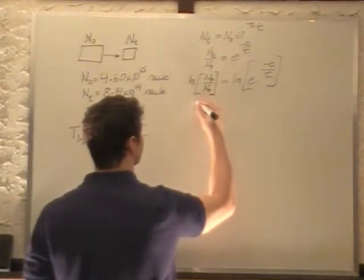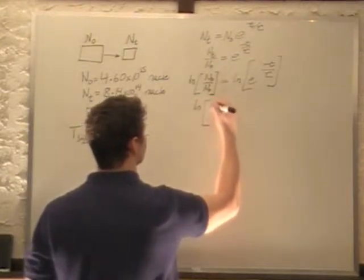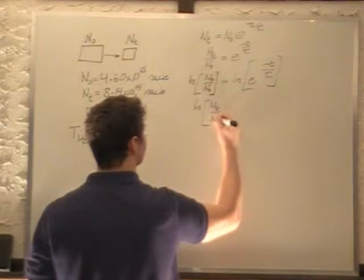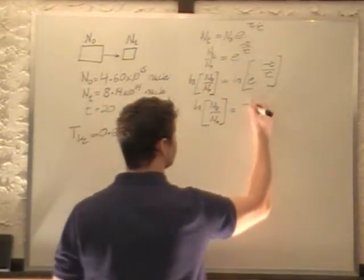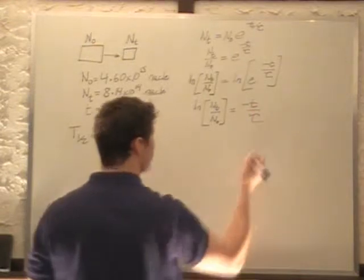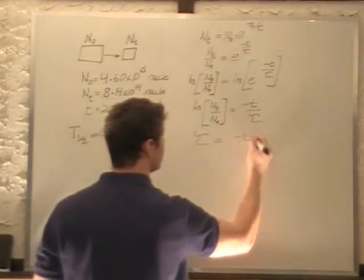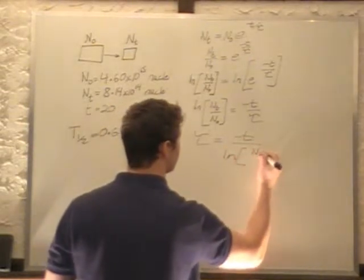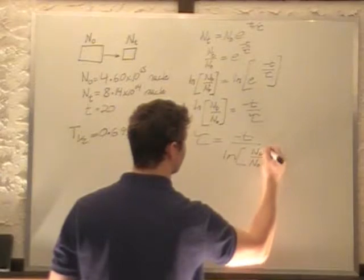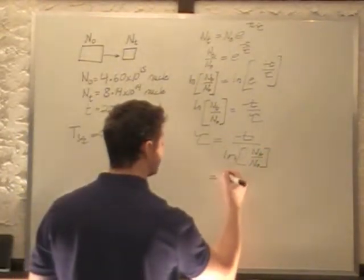We're left with natural log of nt over n0 equals negative t over tau. Solving for tau, we get tau equals minus t over natural log of nt over n0. We plug in what we know: minus twenty days.